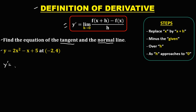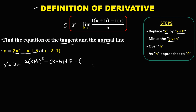So we have y prime equals the limit, then replace x by x plus h. So x becomes x plus h. We have 2 times x plus h to the power 2, minus x — so x becomes x plus h — then plus 5, minus the given: 2x squared minus x plus 5, then over h, as h approaches 0.